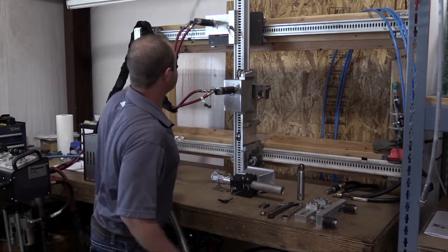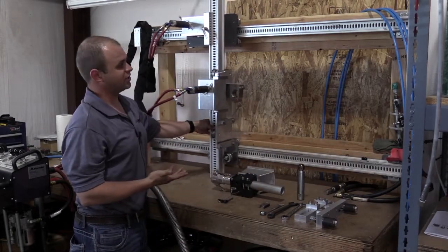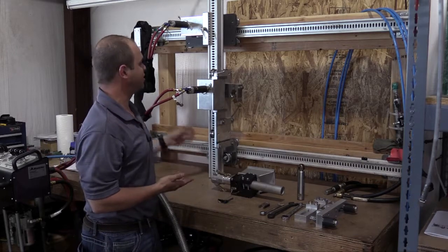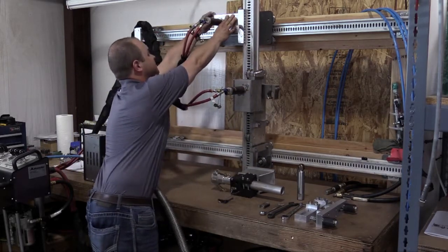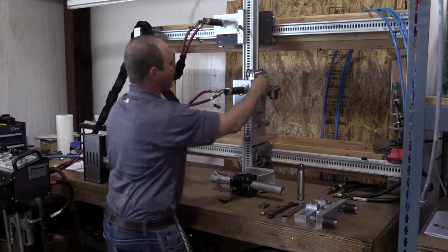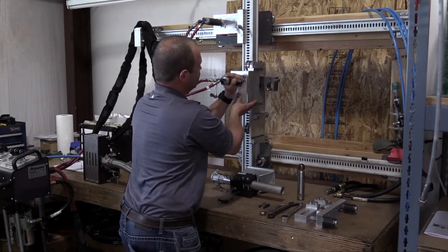Here you can see how our X-rail will move if this was vertically affixed to a tube sheet. Our X-rail will move from side to side to index, and our Y-carriage will move up and down to index.